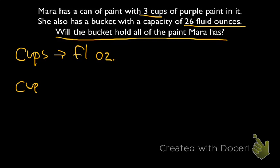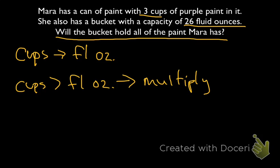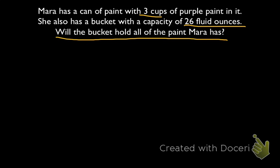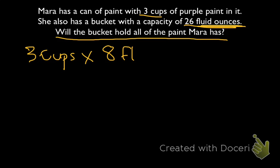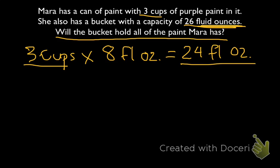Since cups are greater than fluid ounces, that tells us we have to multiply. We have 3 cups, and we multiply by the number of ounces in a cup since we're changing to ounces. There are 8 fluid ounces in 1 cup. 8 times 3 equals 24 fluid ounces. So Mara has 3 cups of purple paint, or 24 fluid ounces.